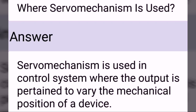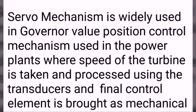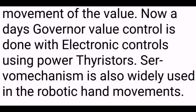Where is a servomechanism used? Servomechanism is used in control systems where the output is pertained to vary the mechanical position of a device. Servomechanism is widely used in governor valve position control mechanisms in power plants, where the speed of the turbine is taken and processed using transducers, and the final control element is brought as a mechanical movement of the valve. Nowadays, governor valve control is done with electronic controls using power thrusters. Servomechanism is also widely used in robotic hand movements.